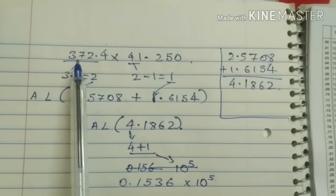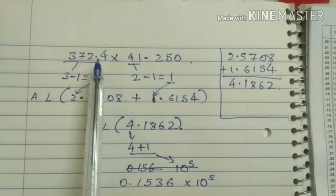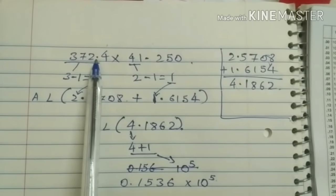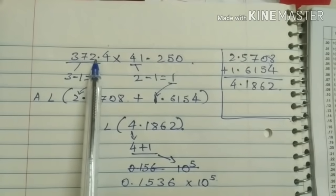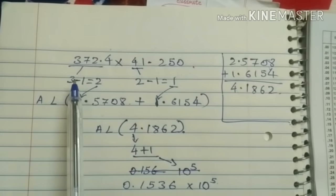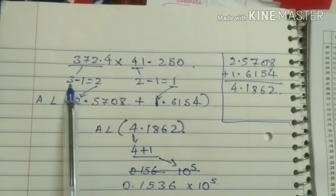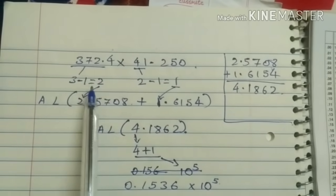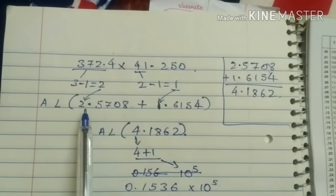So first of all see how much number is before the decimal. This is decimal point, you can see here. Okay, before decimal there are 3 numbers 1, 2, 3. So we have to minus 1 that 3 number. This is 3 number, I have written here 3, 3 minus 1 it is 2. So we have to write 2 here.